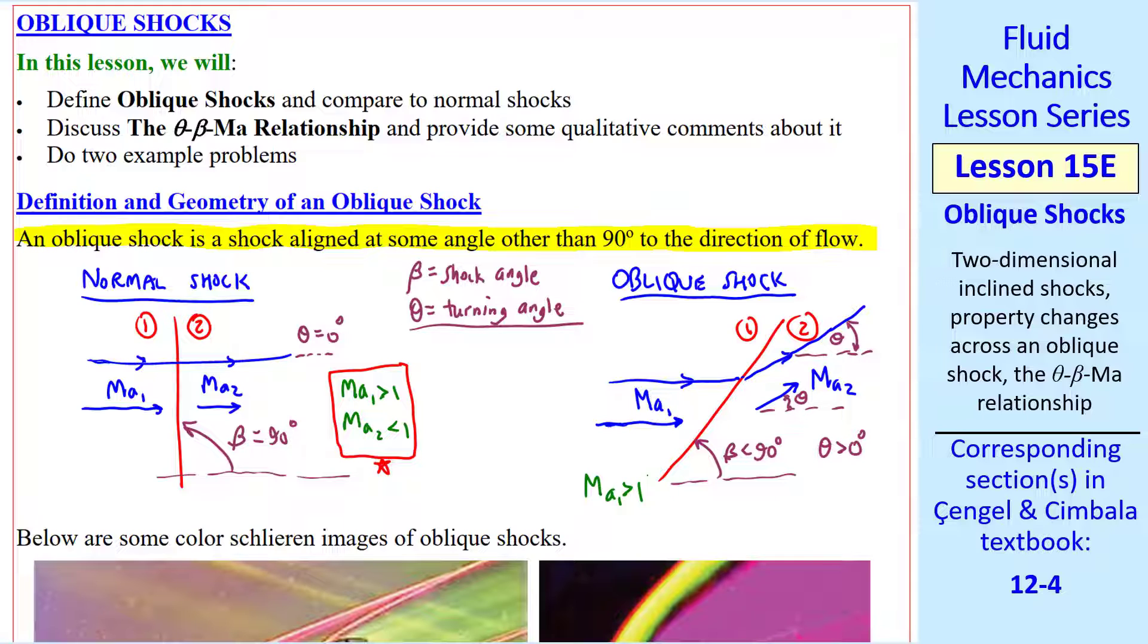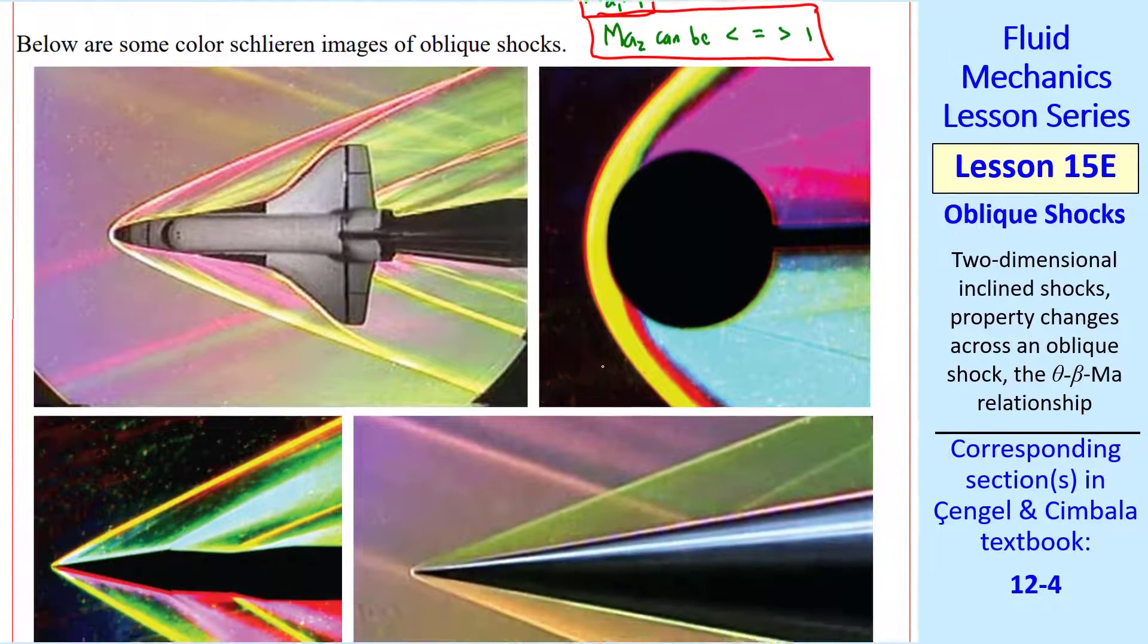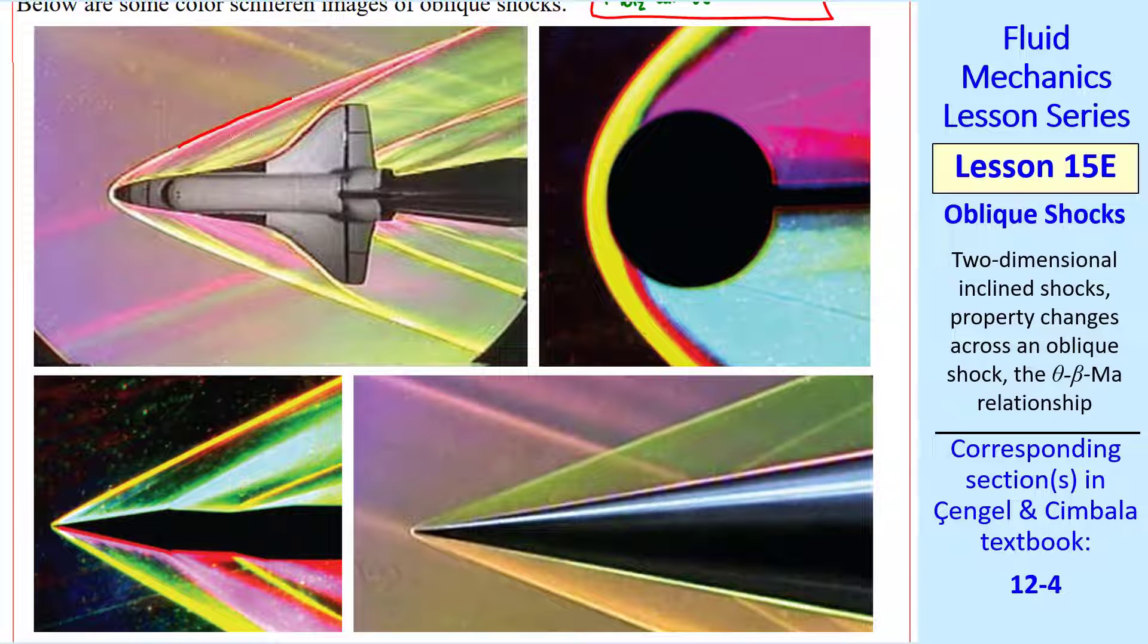Mach number 1 still has to be greater than 1. But Mach number 2 can be less than, equal to, or greater than 1, depending on the value of beta. Here are some examples. These are color Schlieren images of oblique shocks. In this section of the oblique shock, this angle would be beta.